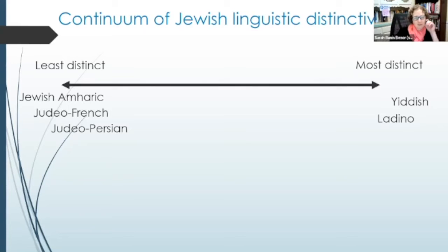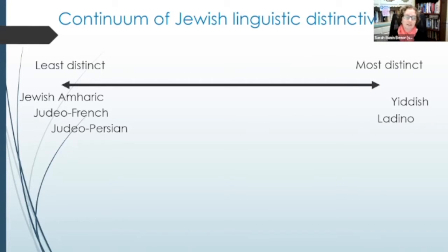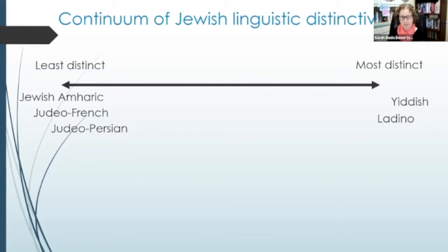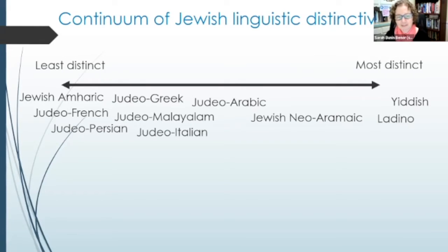At the least distinct end of the continuum, we have Jewish Amharic, which scholars often describe as not distinct at all from Amharic. Maybe there are a few different words, or they avoid some particularly Christian words, but they did not have access to Hebrew texts in Ethiopia and did not incorporate words from Hebrew. Also Judeo-French and Judeo-Persian from the Middle Ages are pretty similar to medieval French and Persian in their written documentation, except that they are written in Hebrew letters. Along the middle of the continuum are languages like Judeo-Greek, Jewish Malayalam, Judeo-Italian, Jewish Neo-Aramaic, and various varieties of Judeo-Arabic.